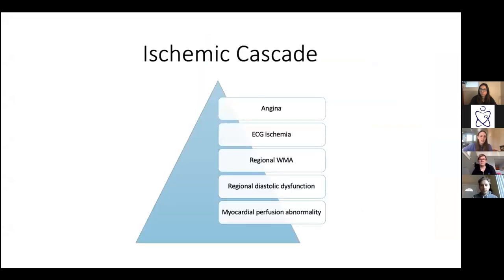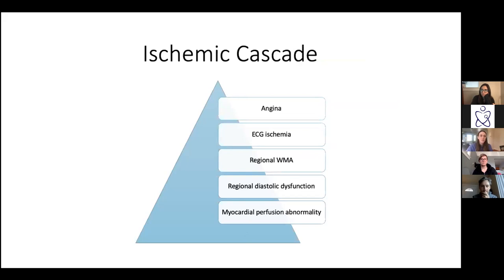Next, the ischemic cascade — a framework for seeing the most sensitive signs of ischemia. Starting with myocardial perfusion abnormalities, that's the first thing you'll see, and something we can only detect with imaging. With more significant ischemia, you can develop diastolic dysfunction followed by regional wall motion abnormalities. Then you finally get EKG changes, and then a patient would develop symptoms beyond that.